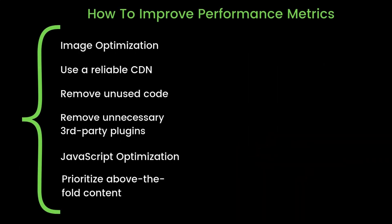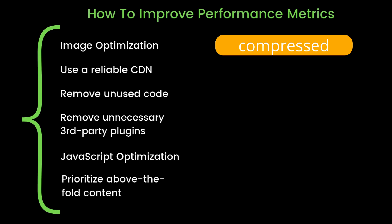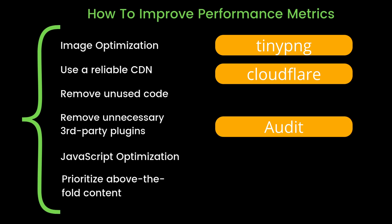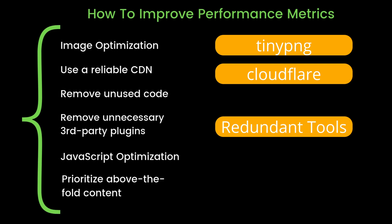If the tool is telling you that you have very bad performance metrics, there are a few things you can do for some easy wins. First is image optimization — make sure your images are compressed and load as fast as possible. You can use a tool like TinyPNG. Next, make sure you're using a reliable content delivery network to speed things up depending on where people are in the world. Something like Cloudflare is really useful. Next, remove any unused code and any unnecessary third-party plugins — remove stuff like Hotjar and any other tools you no longer require.